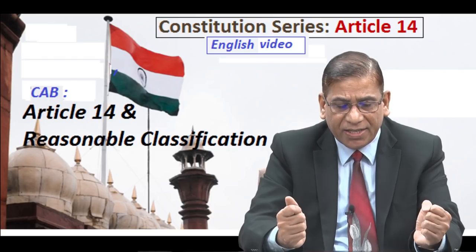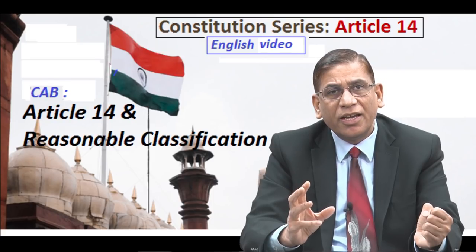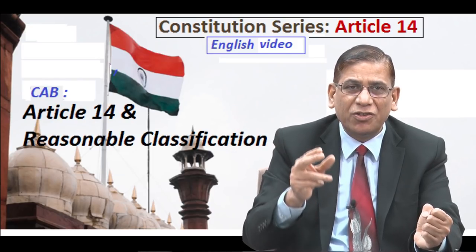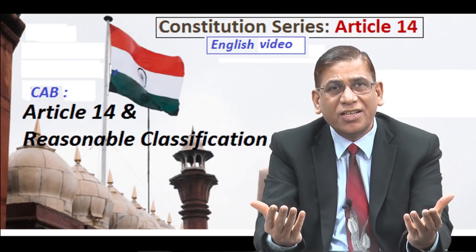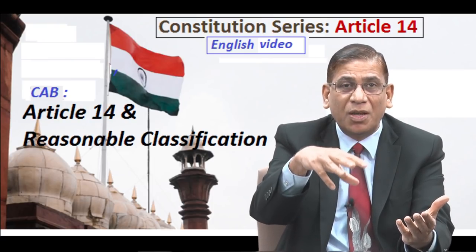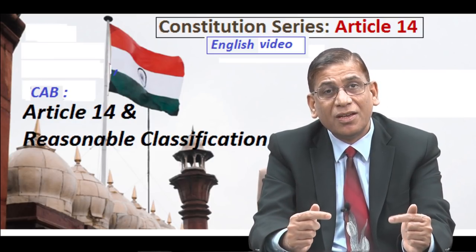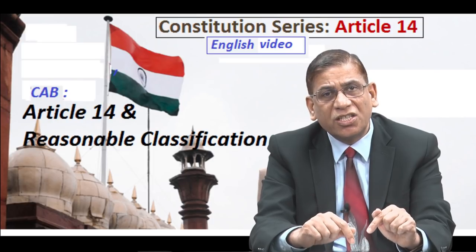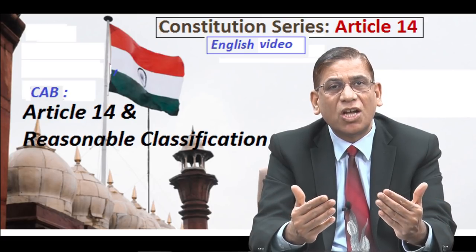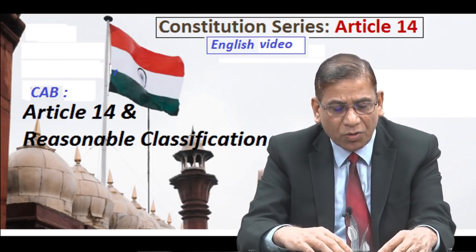Similarly, in P. Rajindran versus State of Madras, a 1968 judgment, medical seats were to be distributed according to districts: more population means more seats. This classification looks reasonable — even Parliament has Lok Sabha seats depending on state population, and UP sends 80 MPs because it has the highest population. But the Supreme Court said that classification of seats based on district population has no rational object to achieve, because the object of admission is to select the best candidate for medical study, and therefore struck down the classification.